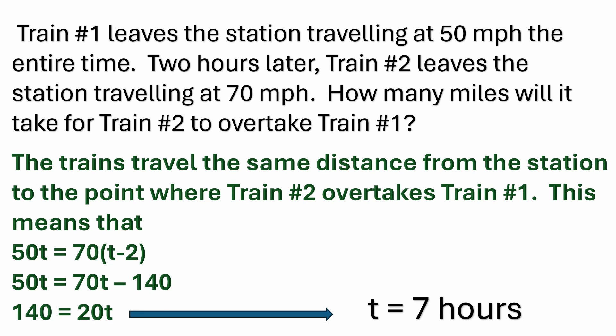The trains travel the same distance from the station to the point where train number two overtakes train number one. They're meeting at some point, so that point is the same distance from the station regardless of which train. It just takes train number two less time to get to that point because it's traveling faster.